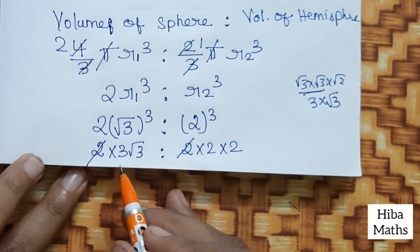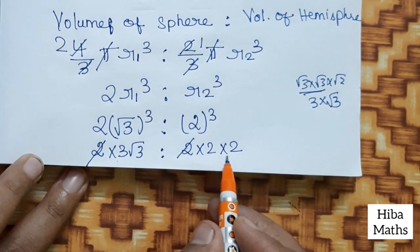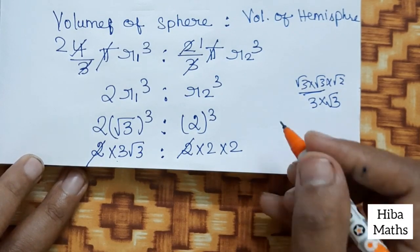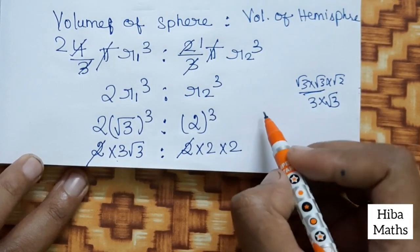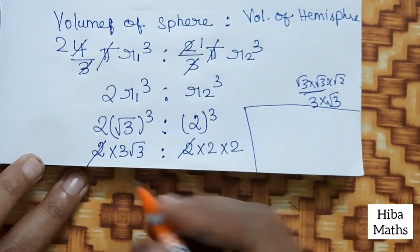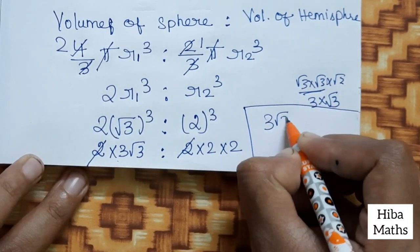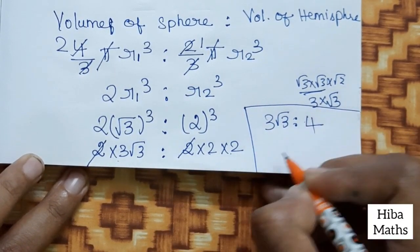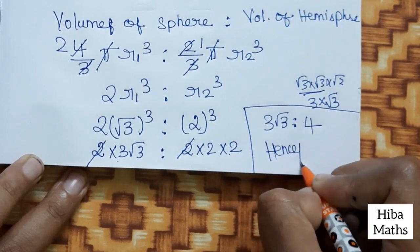So we get 2 times 3√3 is to 2 times 2 times 2, which is 3√3 is to 4. That is the proof. Hence proved.